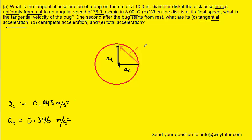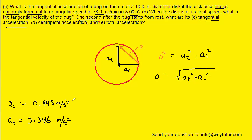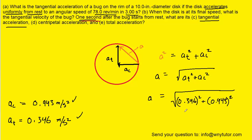Therefore, a² equals the tangential acceleration squared plus the centripetal acceleration squared. Taking the square root of both sides, we plug in the known values. Omitting units for clarity, when we process that we get roughly 1 meter per second squared for the magnitude of the total acceleration.